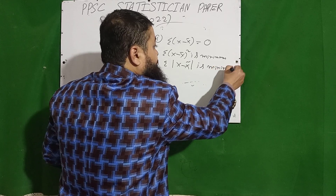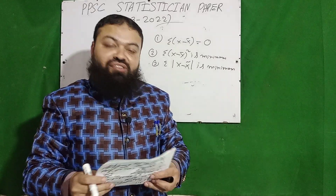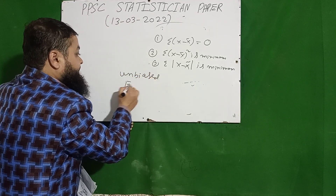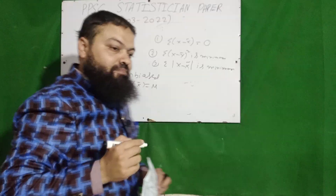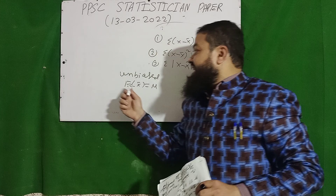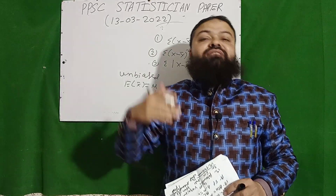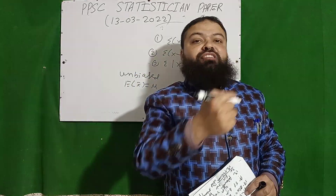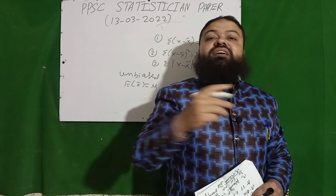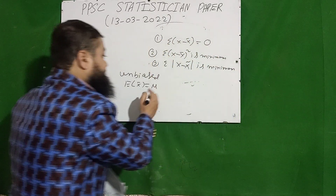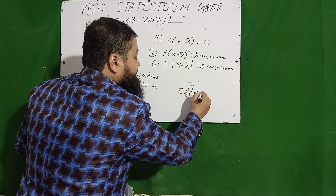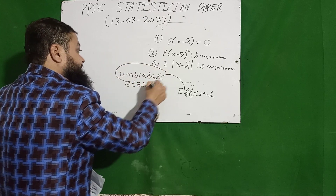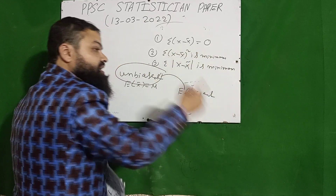The next question: if an estimator is unbiased — unbiased means E(x̄) = μ — an estimator is said to be unbiased if its expectation equals the population parameter. The question is: if an estimator is unbiased, must it be consistent or efficient? It is not necessary. However, if an estimator is efficient, it must be unbiased. But it is not necessary that an unbiased estimator must be consistent or efficient.